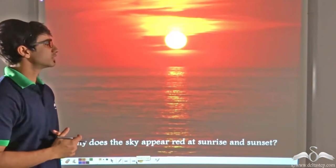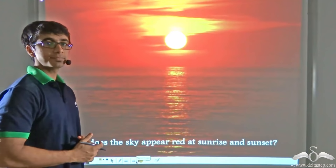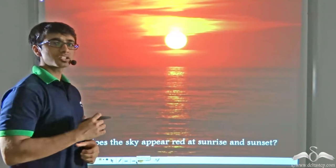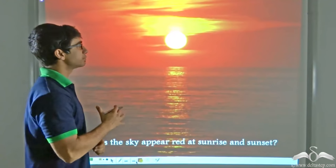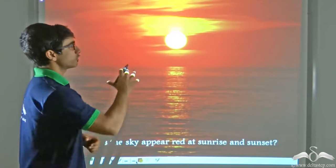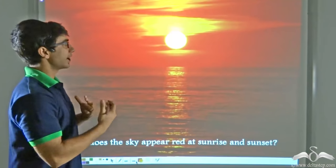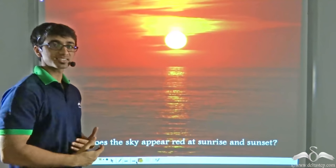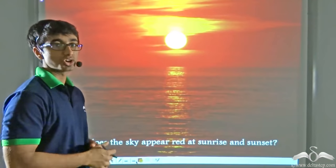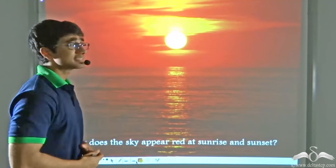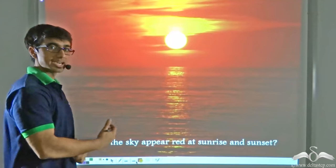Now you must have observed that when the Sun is rising in the morning or setting in the evening, the color of the sky no longer remains blue — it becomes a very deep hue of orange and red. So why does this happen? We just discussed why the color of the sky appears blue and not red, so now why is it appearing red and not blue?